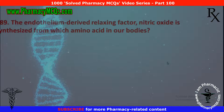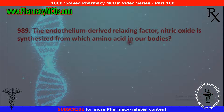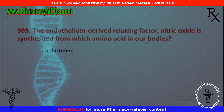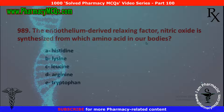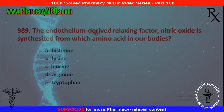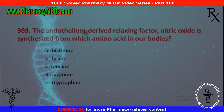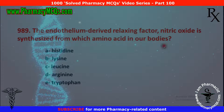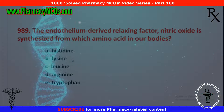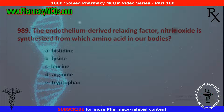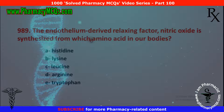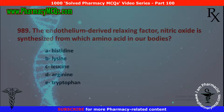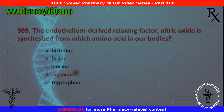Next MCQ: the endothelium derived relaxing factor nitric oxide (EDRF) is synthesized from which amino acid in our bodies? Options are: histidine, lysine, leucine, arginine, and tryptophan. We need to identify the precursor for nitric oxide. The amino acid from which nitric oxide is synthesized is arginine. So the correct option is D.